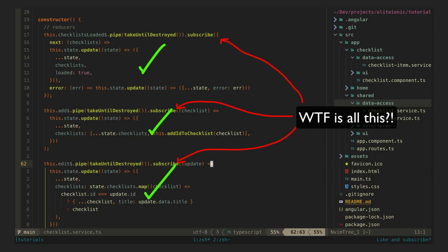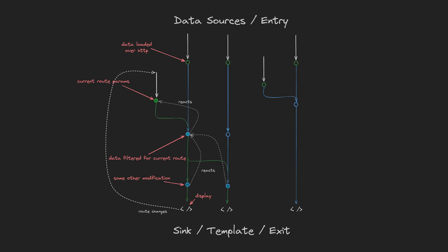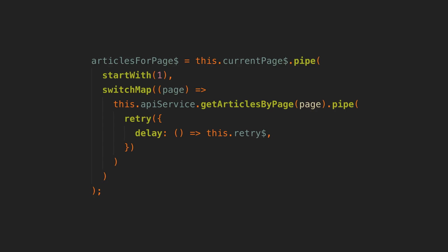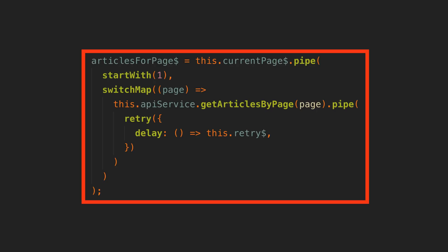We've already covered the concepts and benefits of declarative code many times over, so if you want an in-depth explanation I'll link to some videos in the description. But the key idea is that with declarative code, we can understand everything we need to know about a particular thing in our application by looking at its declaration. Take this articles-for-page example.